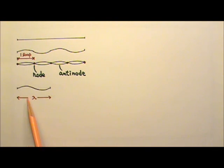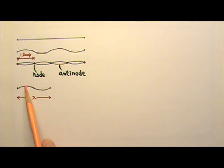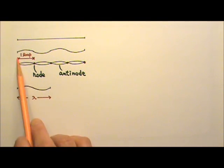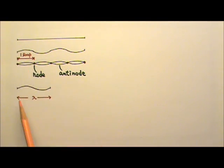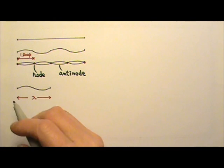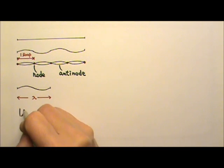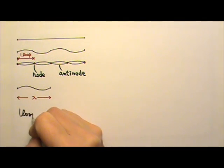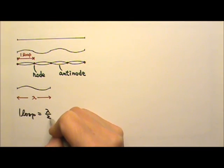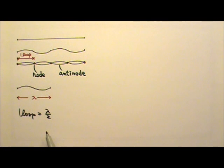Because one wavelength is always the wave going up, down, and then back, the length of one loop is always half a wavelength. So one loop is always half a wavelength. You shall find this very useful for standing wave problems.